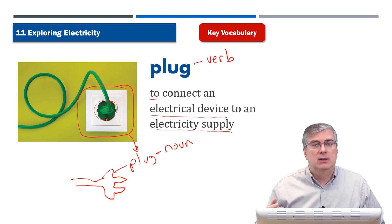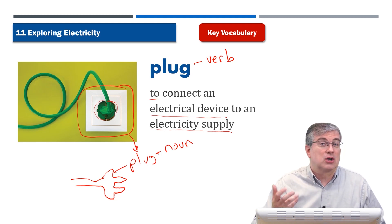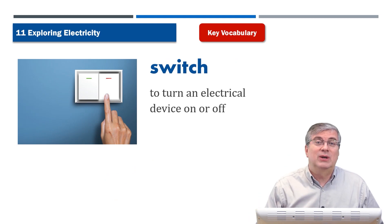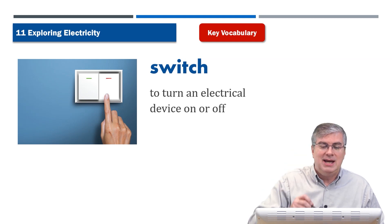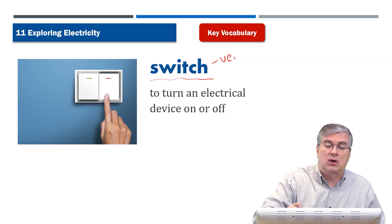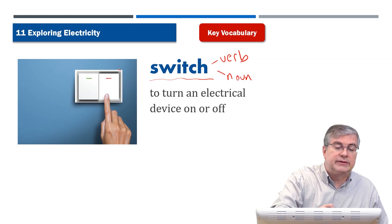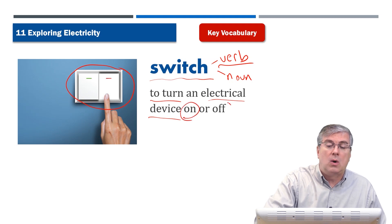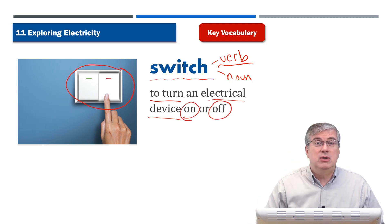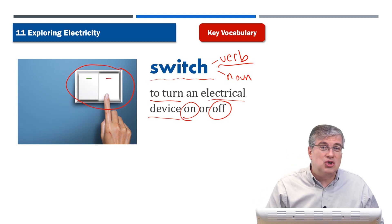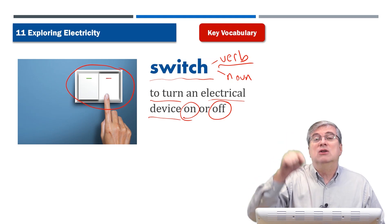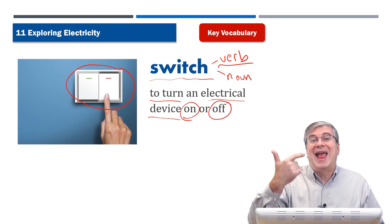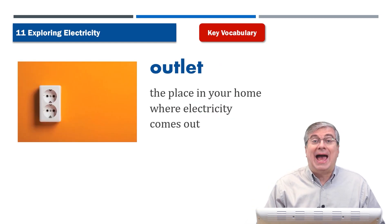Next is 'switch.' You can see switches on the walls in a room — those are for the lights. Switch is again both a verb and a noun. As a verb, switch means to turn an electrical device on or off. Where is the switch on your computer? Maybe it's a button — you push it, you switch it on. But the device itself is also called a switch, so it's both a verb and a noun.